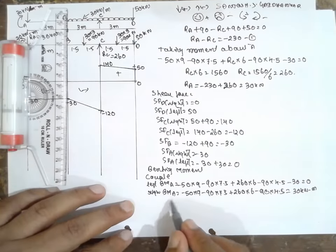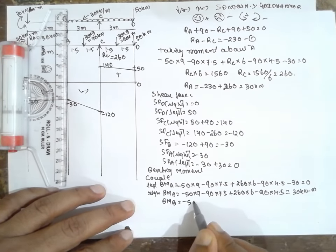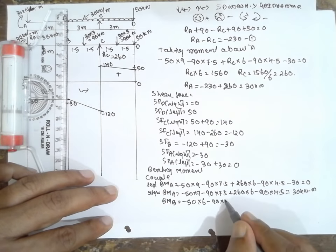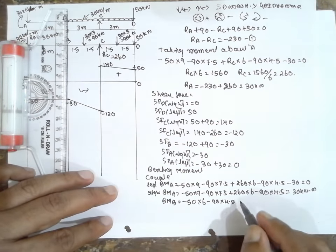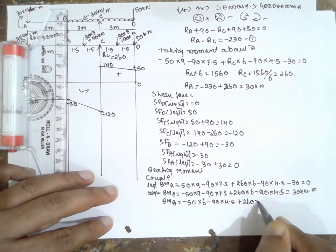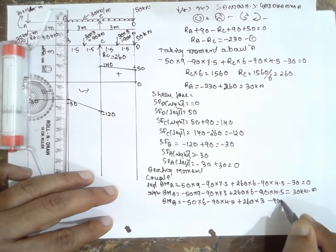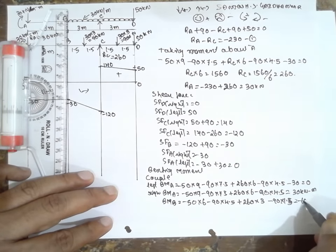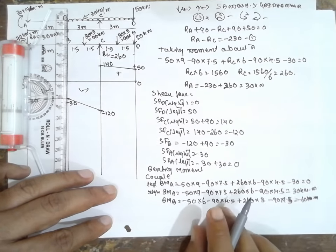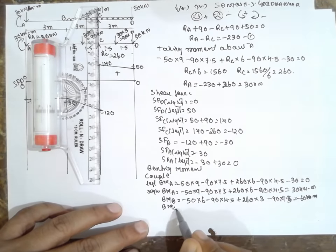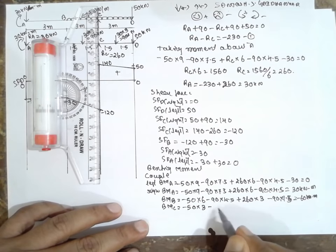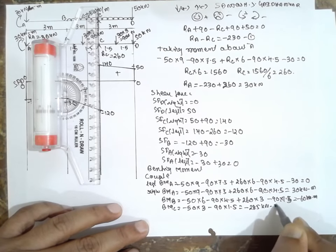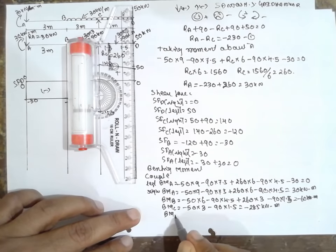Bending moment at B: minus 50 into 6, minus 90 into 4.5, plus 260 into 3, minus 90 into 1.5 gives minus 60 kilonewton meter. Bending moment at C is calculated similarly. Bending moment at D equals 0.